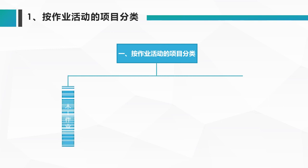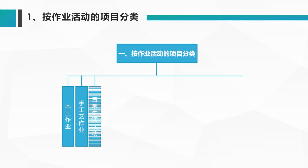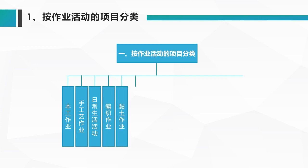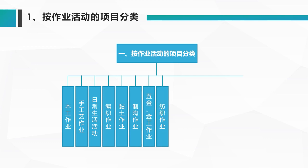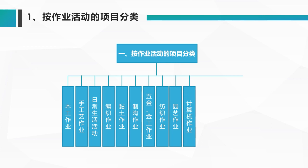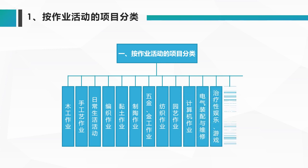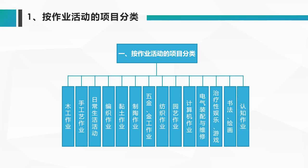第四节，作业治疗的分类。按照活动项目分类，分成：木工作业、手工艺作业、日常生活活动、编织、黏土作业、自助作业、五金作业、纺织作业、计算机操作、电器装配和维修、治疗性娱乐和游戏、书法练习、绘画练习，以及简单的认知作业等。